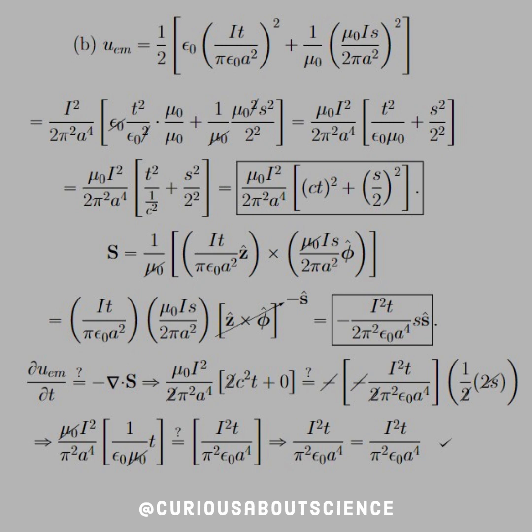But what we need to do to find things commonly is to factor out a mu naught. What we do is multiply by mu naught over mu naught on the E field term. So what we see here is T squared over epsilon naught mu naught plus S squared over 2 squared. We keep it all squared for a reason. And then here we see that epsilon naught mu naught equals 1 over C squared. So we can factor all this into a square form. And we see that UEM equals mu naught I squared over 2 pi squared A to the 4th times CT squared plus S over 2 squared.